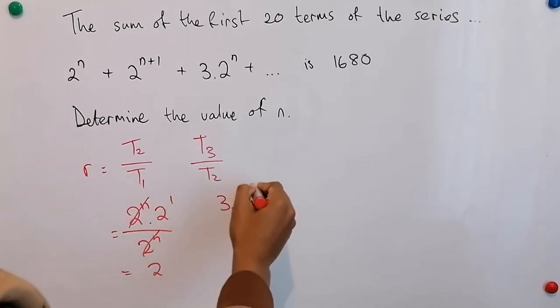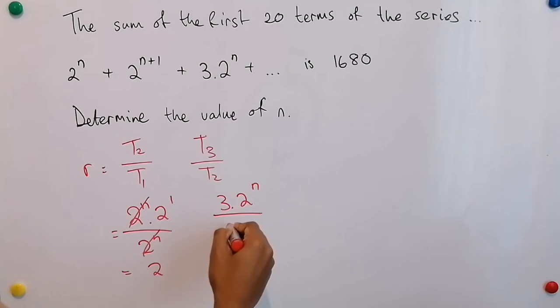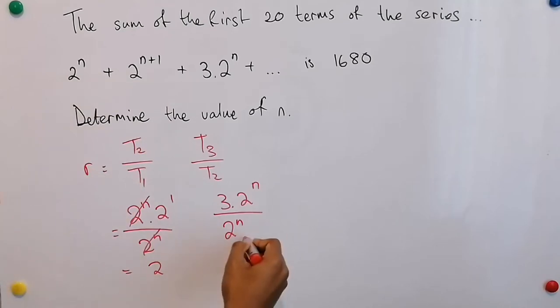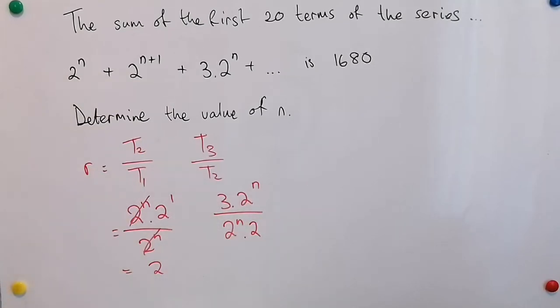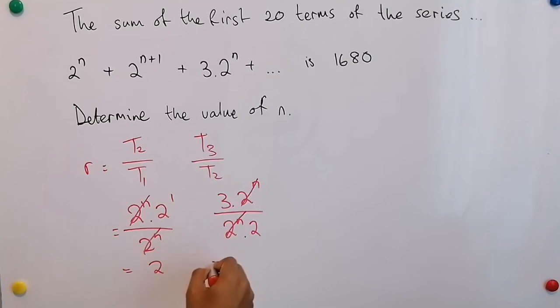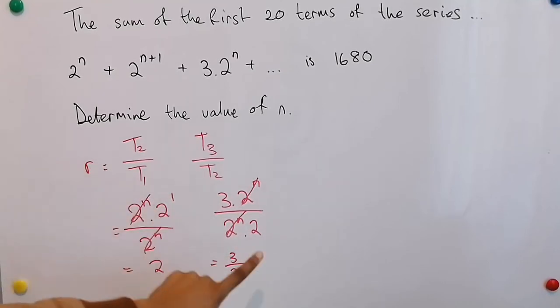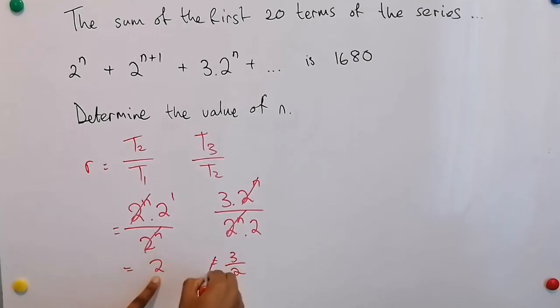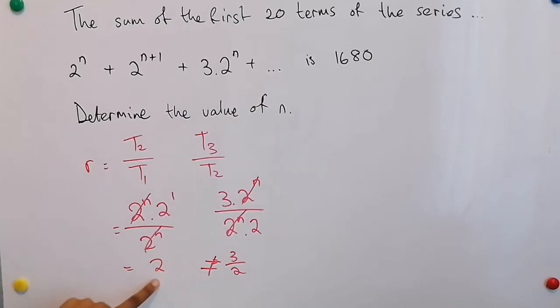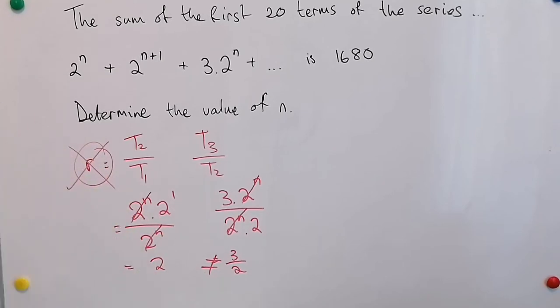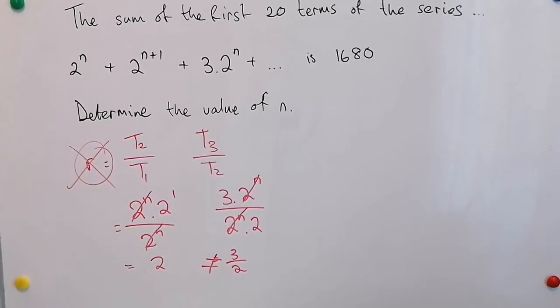We're going to substitute the third term divided by the second term. Again, I'm writing the second term as 2 to the power of n times 2 to the power of 1. The 2 to the power of n cancel and your ratio for this is 3 over 2. Now since 3 over 2 is not equal to 2, therefore we do not have a constant ratio and this is not a geometric pattern.